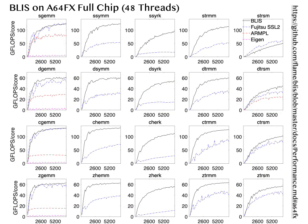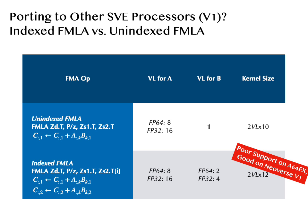I'd also like to share the full chip performance with 48 threads. Please note the Y-axis shows GFLOPs per core, not total GFLOPs. For the DGEMM case, GFLOPs per core is around 60, so the total performance would be 60 times 48 equals approximately 2.88 teraflops. Because of the better threading strategy in BLIS, basically all operations, even including the triangular solver, are getting above the vendor BLAS SSL2.